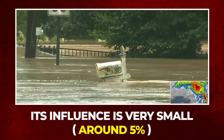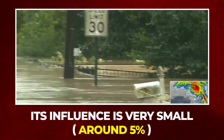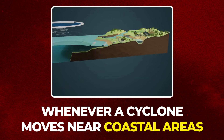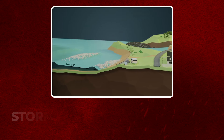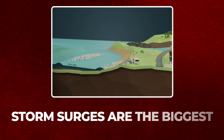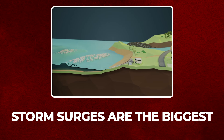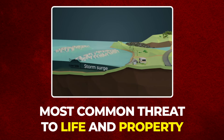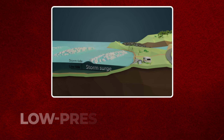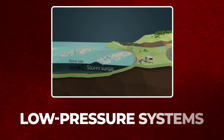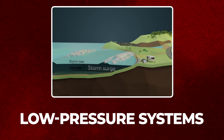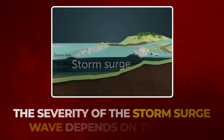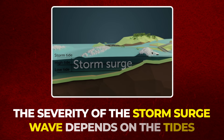Although low pressure also contributes to the surge, its influence is very small — around five percent. Whenever a cyclone moves near coastal areas, storm surges are the biggest and most common threats to life and property. This phenomenon is commonly found in low pressure systems.